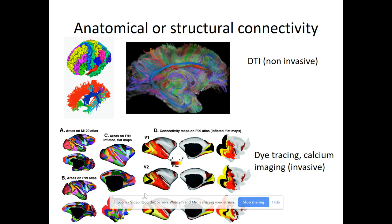We have anatomical or structural connectivity — and here we are talking about large-scale brain connectivity, not individual connections between neurons, but anatomical connections between brain areas. We have a non-invasive way of measuring it, which is diffusion tensor imaging, and invasive ways such as retrograde dye tracing: injecting some product into part of the brain, which is then synaptically propagated to other parts.